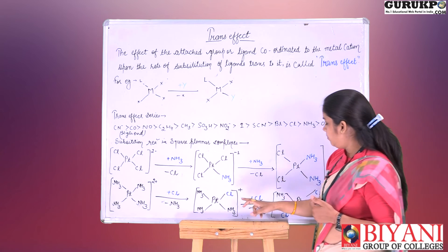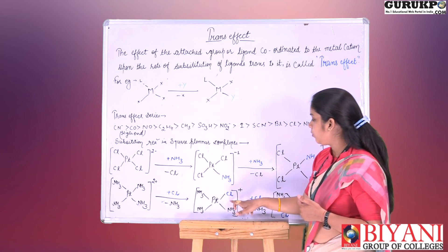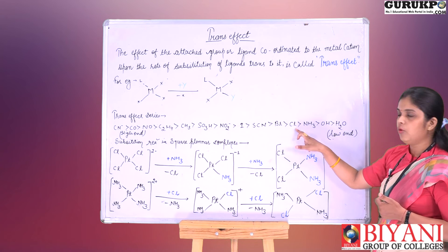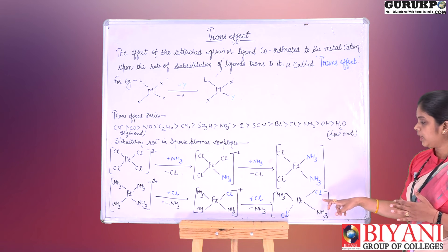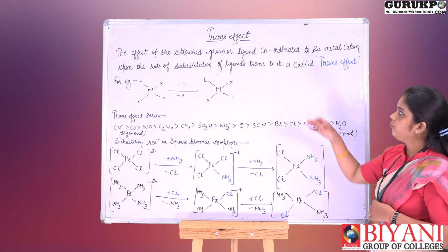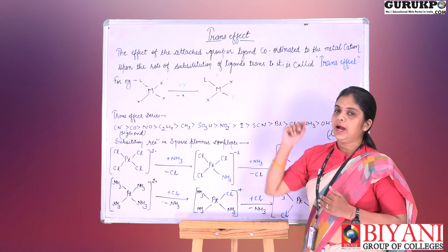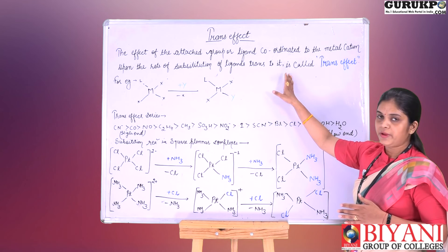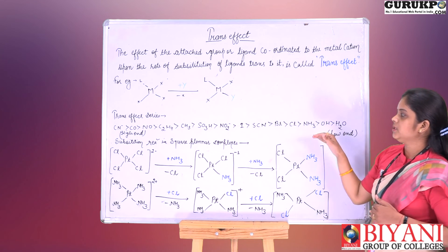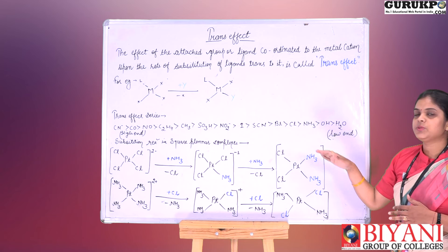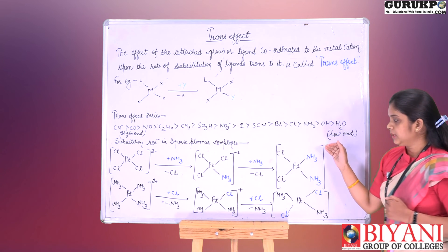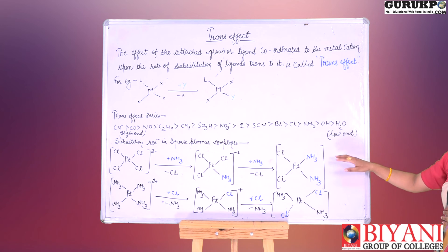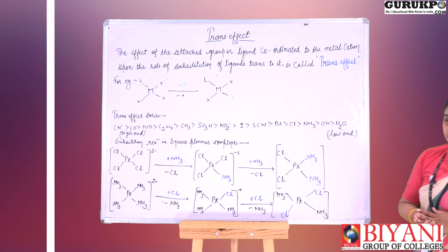This ammonia is replaced by chlorine because chlorine has more trans effect than ammonia, so here we get the trans product of this platinum complex. In this lecture I explained what is trans effect, the trans effect series, and the substitution reaction in square planar complexes. One example gives the cis product and the other gives the trans product.